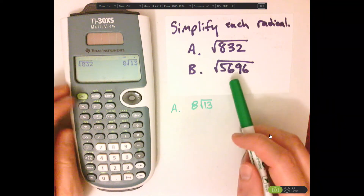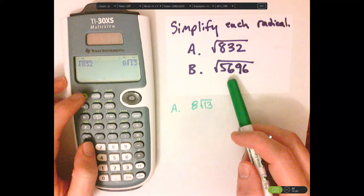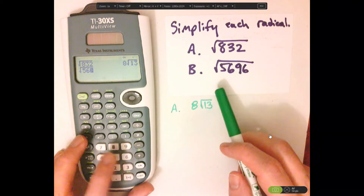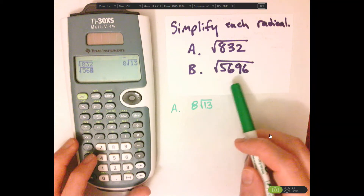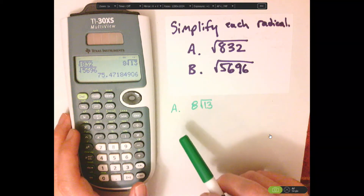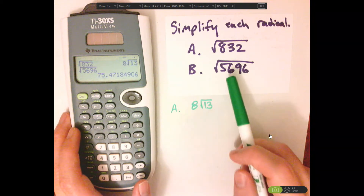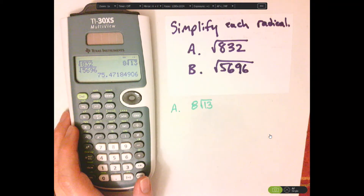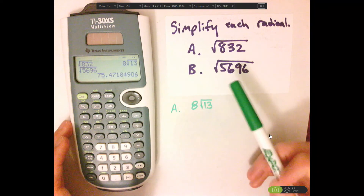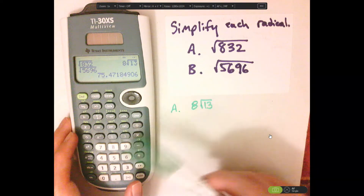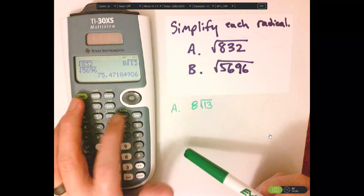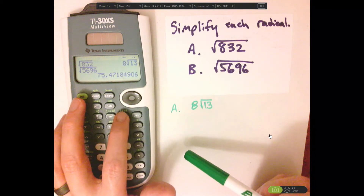Now let me type this in — this one is a little bigger. Let's see if it does it: 5,696. It didn't simplify it. So when it can't simplify it, use a trick — you can use your table feature.